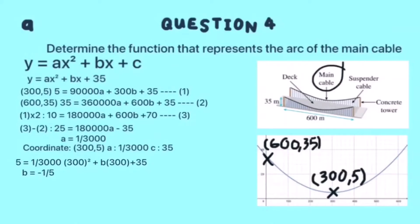Lastly, substitute a, b, and c into the quadratic formula to get the function that represents the arc of the main cable. We will get y = 1/3000 x² - 1/5x + 35. That is the final answer.